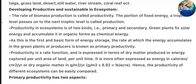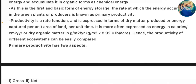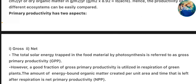It is more often expressed as energy in calories per centimeter square per year or dry organic matter in grams per meter square per year. Hence, the productivity of different ecosystems can be easily compared. Primary productivity has two aspects: gross and net.